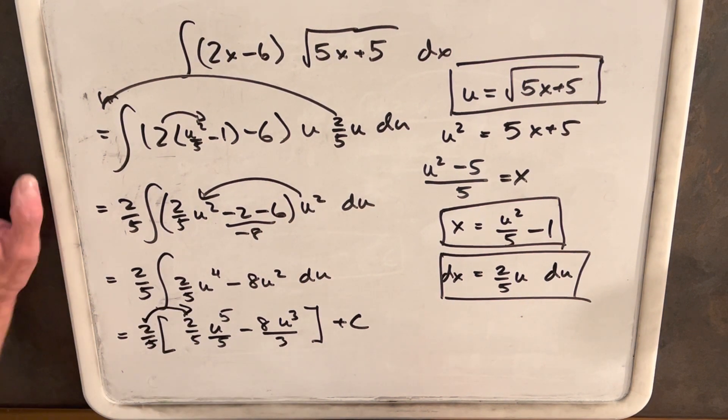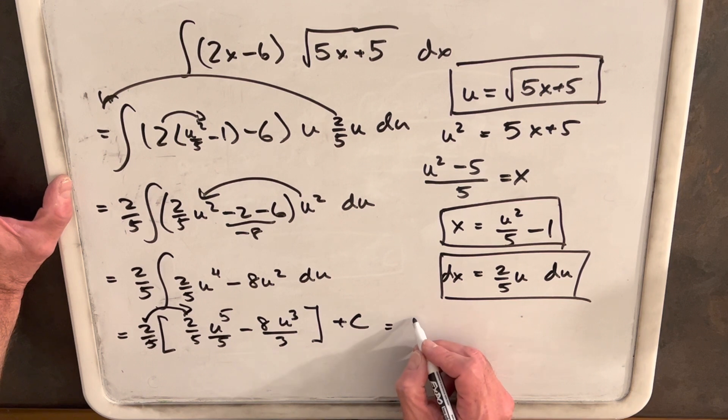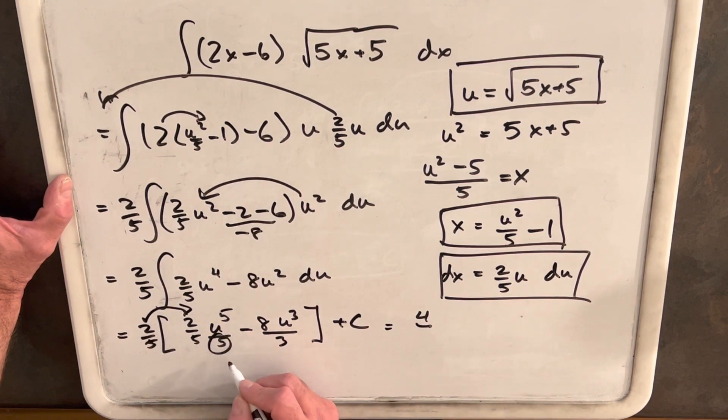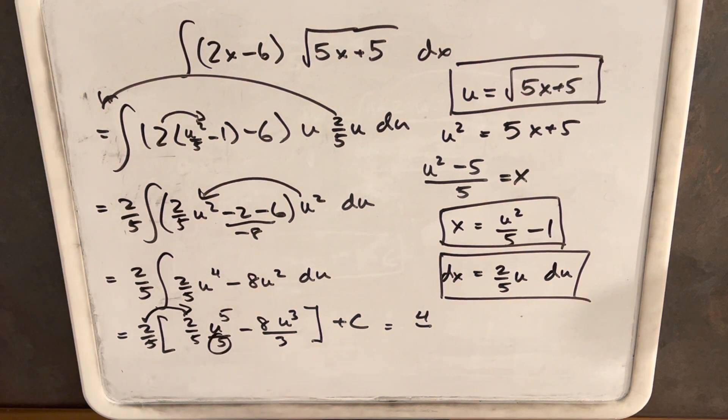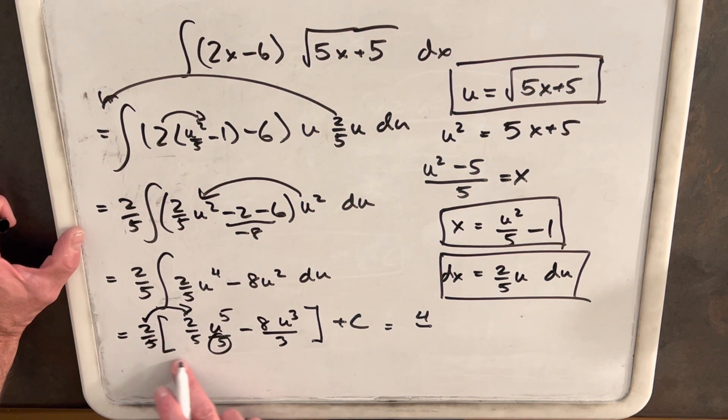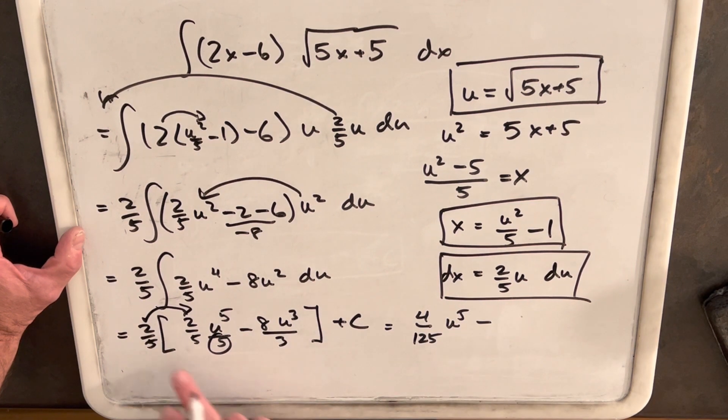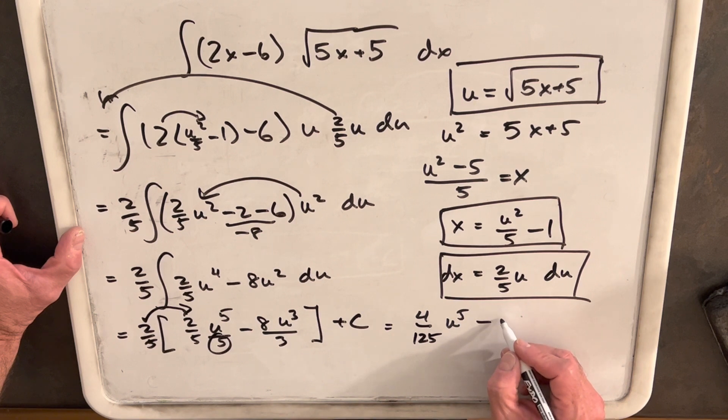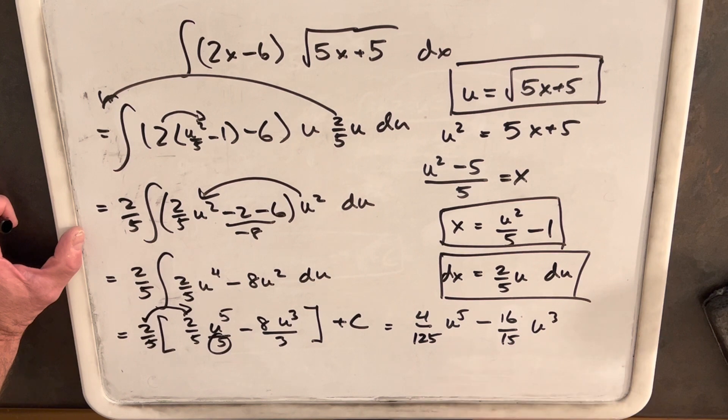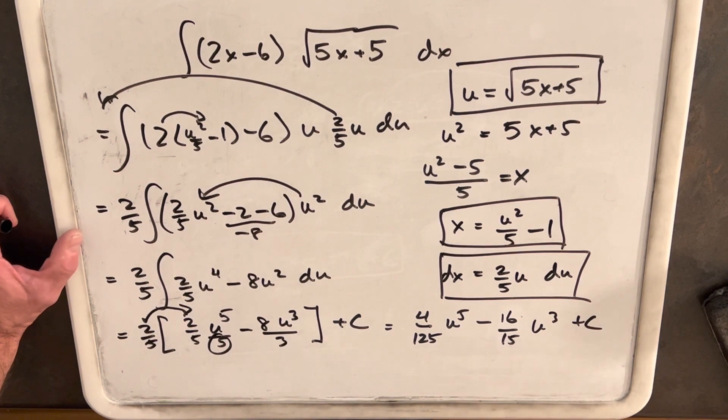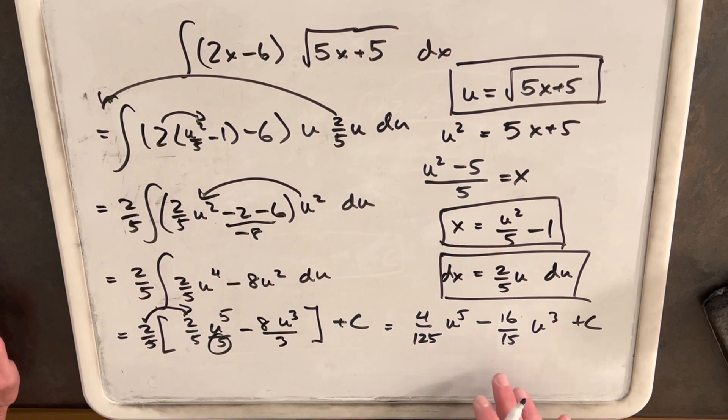Yeah, let's distribute this 2 fifths. So we're going to have 4. Oh, and then don't forget this 5. I'm telling you not to forget, but I don't want to forget. So we've got this going to be 4 over 125 u to the 5th. So 2 fifths times minus 8 thirds is minus 16 over 15 u cubed plus C. Then from here, all we need to do is back substitute with this in order to get our answer.